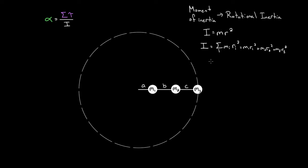For a three-mass system with masses on strings of lengths A, B, and C, the total moment of inertia would be: m₁ times A squared, plus m₂ times (A plus B) squared, plus m₃ times (A plus B plus C) squared. Note that m₂'s distance from the axis isn't just B — it's A plus B all the way from the axis. This gives the total moment of inertia for the entire system.